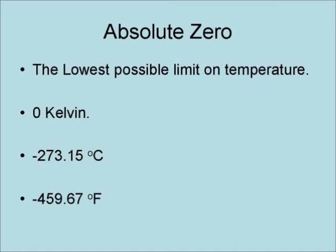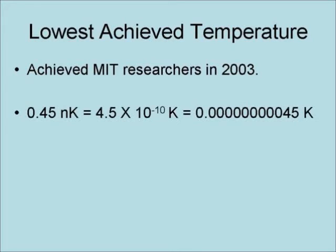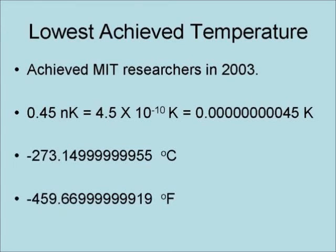That is also equivalent to minus 459.67 degrees Fahrenheit. The lowest temperature ever achieved was achieved by MIT researchers in 2003. That temperature was 0.45 nanokelvin, which is 45 ten-billionths of a Kelvin, or 45 ten-billionths of a degree Celsius above absolute zero. And here is the same temperature in Celsius and Fahrenheit respectively.